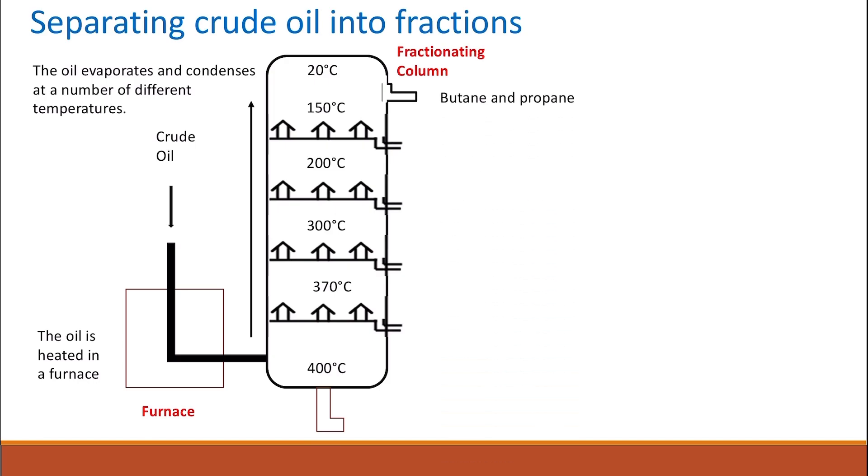At the top are shorter chain hydrocarbons like butane and propane. Then, as you go down and temperature increases, petrol will be condensed, and then kerosene, diesel, and fuel oil. At the bottom, you're going to find the semi-solid and solid components such as lubricating oil, paraffin wax, and asphalt.